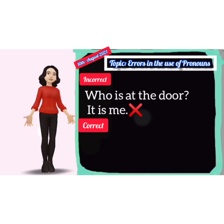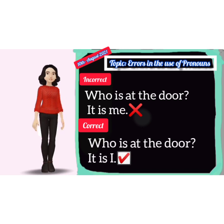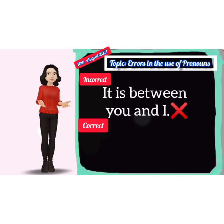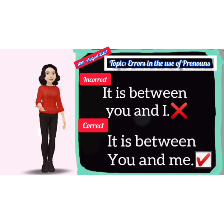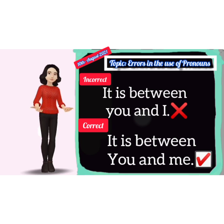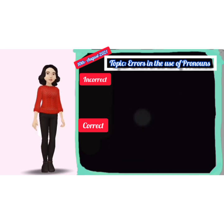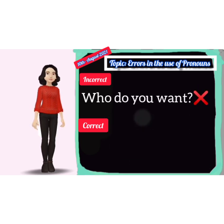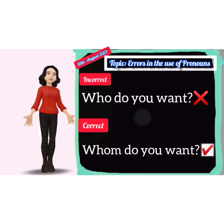Third: incorrect — 'Who is at the door? It is me.' Correct — 'Who is at the door? It is I.' Fourth: incorrect — 'It is between you and I.' Correct — 'It is between you and me.' Fifth: incorrect — 'Who do you want?' Correct — 'Whom do you want?'